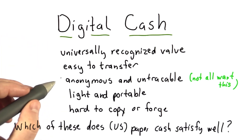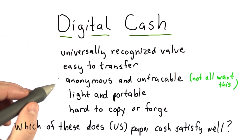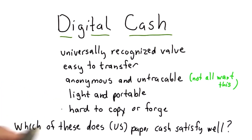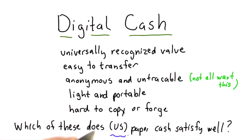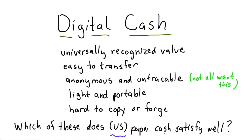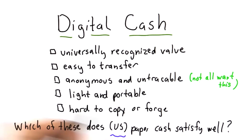So assuming that we do want these five properties, which of these does US paper currency satisfy well? I apologize for specifying US — I know many of you are not in the US and have different paper currencies, and you can answer this for your currency. I'm going to answer this for what I think about US paper cash. It's definitely a subjective question, but we'll talk about what I think the right answer is.